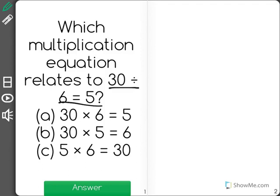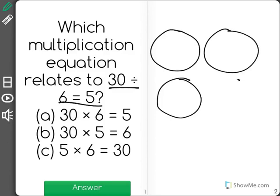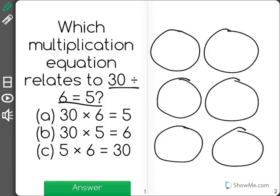What I'm going to do is I'm going to draw out 30 divided by 6. I know that I have a total of 30, and I'm splitting it into 6 groups. And according to the answer, each group will get 5.